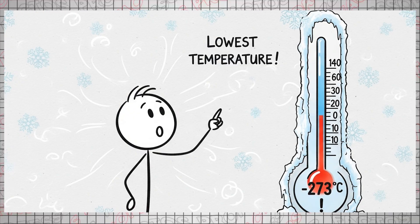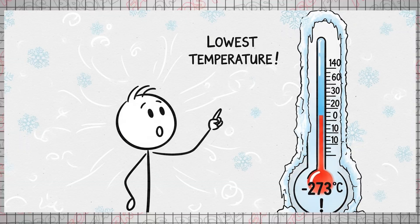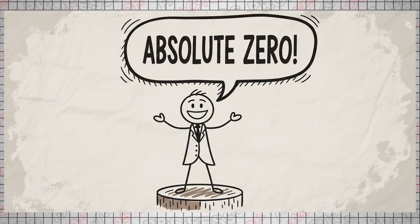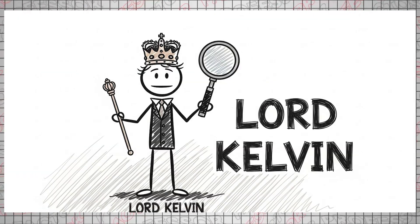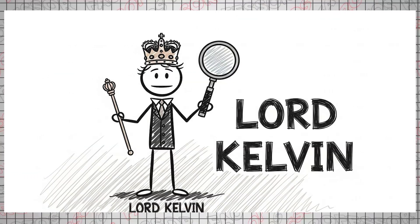But Gay-Lussac was a scientist, and he drew a different conclusion: that minus two hundred seventy-three degrees Celsius was the lowest possible temperature in the universe. Unbeknownst to him, he was profoundly correct and proclaimed it loudly.